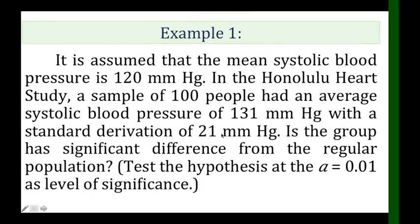Let's have an example. It is assumed that the mean systolic blood pressure is 120 in the Honolulu Heart Center study. A sample of 100 people had an average systolic blood pressure of 131 with a standard deviation of 21. Is the group significantly different from the regular population? Test the hypothesis at alpha equals 0.01 level of significance.